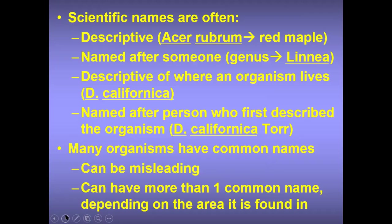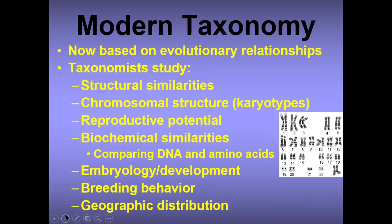A chicken here might not be called a chicken somewhere else. A roach here might not be called a roach somewhere else. So you need scientific names so that naming is constant. When you ask for a particular organism using scientific names, you'll definitely get the right one.